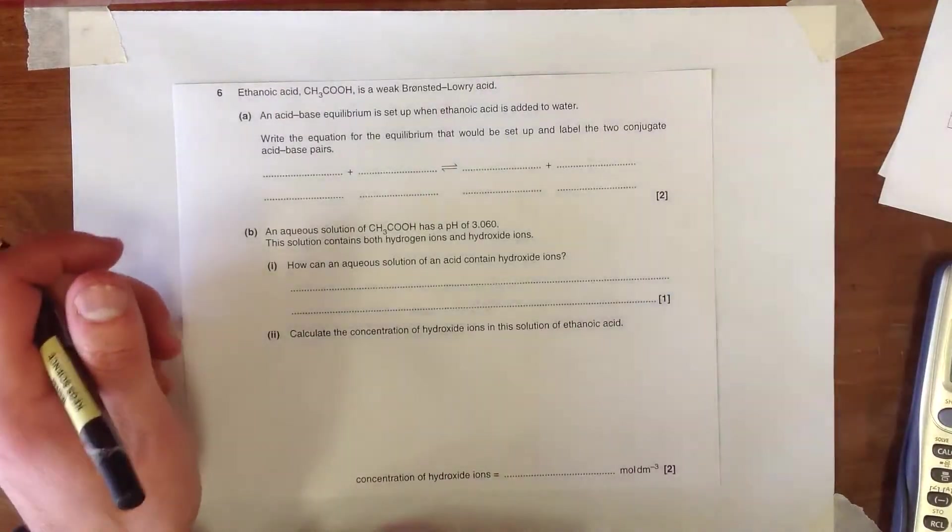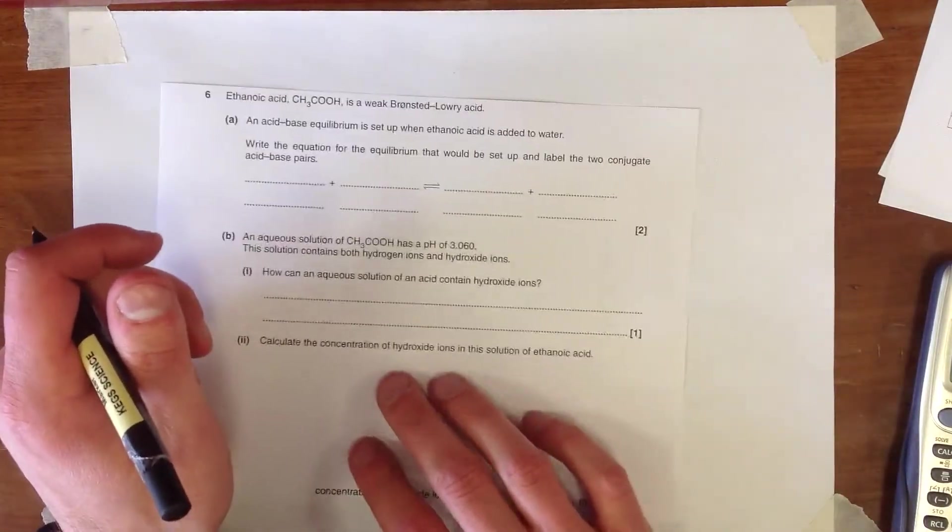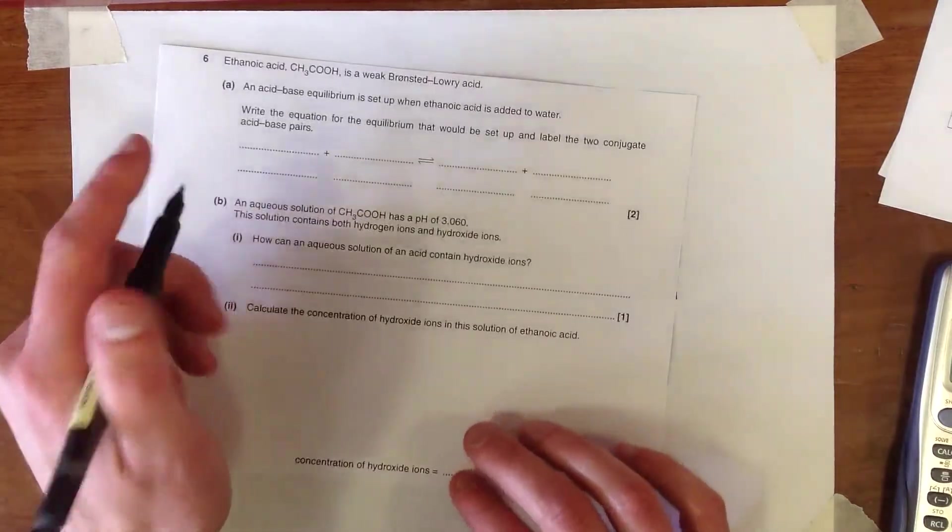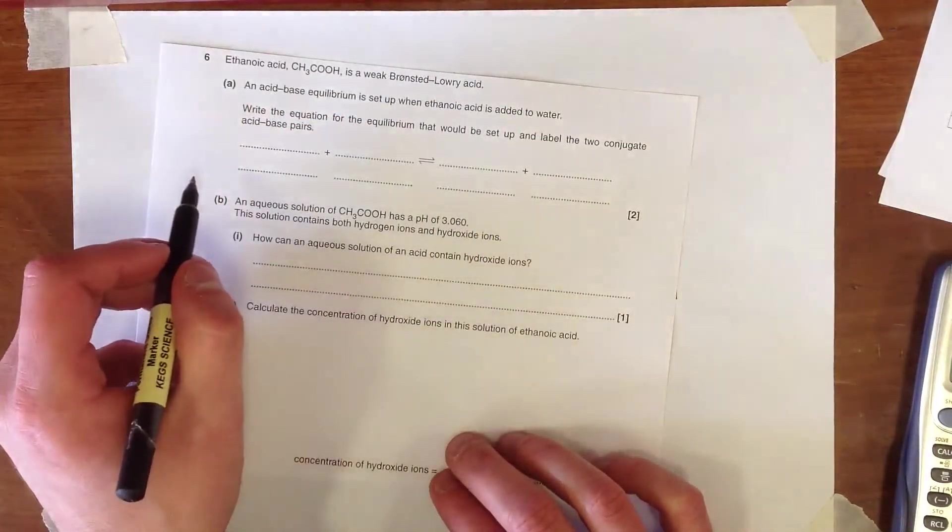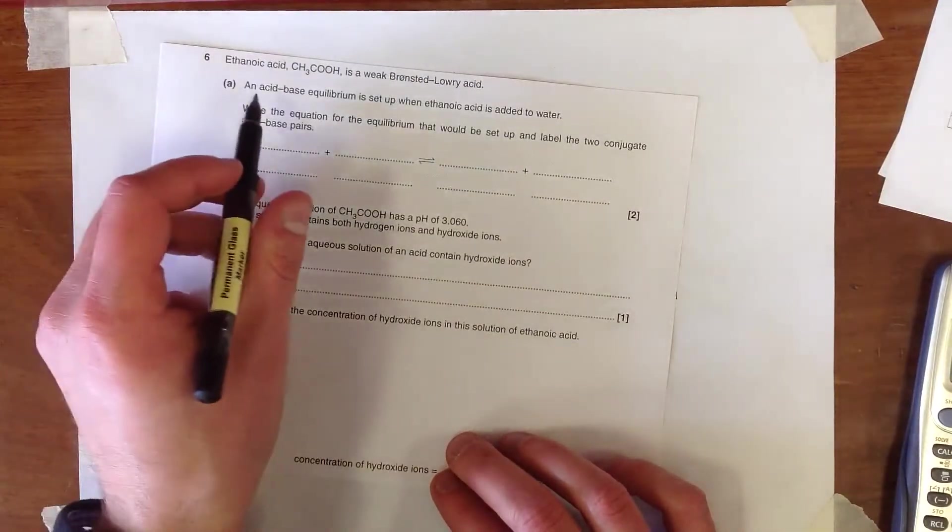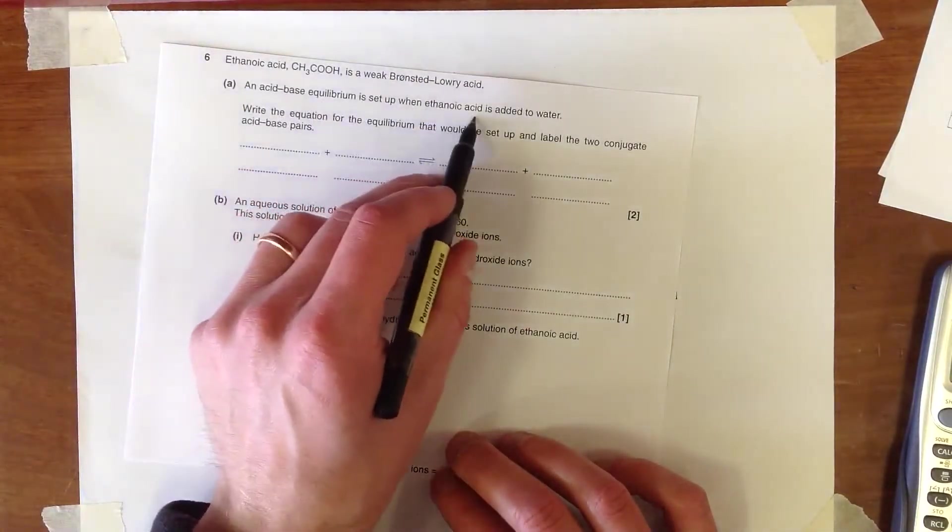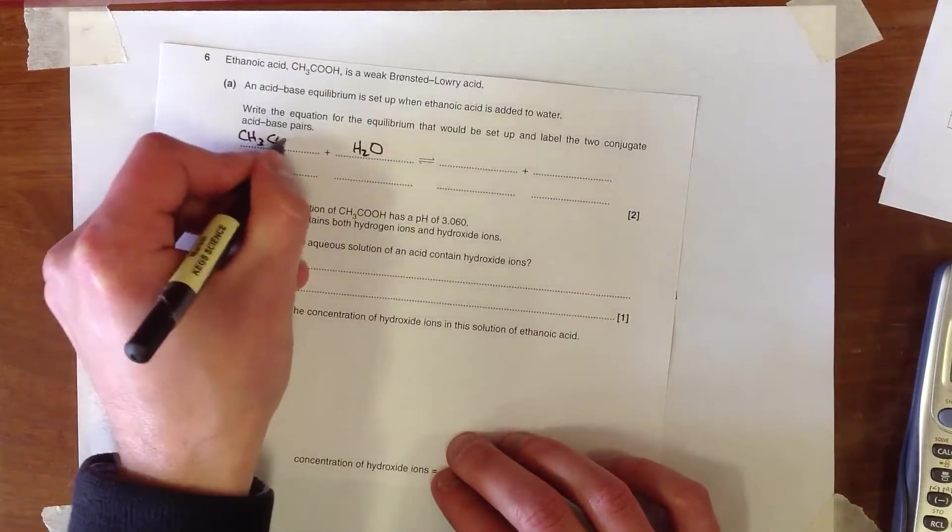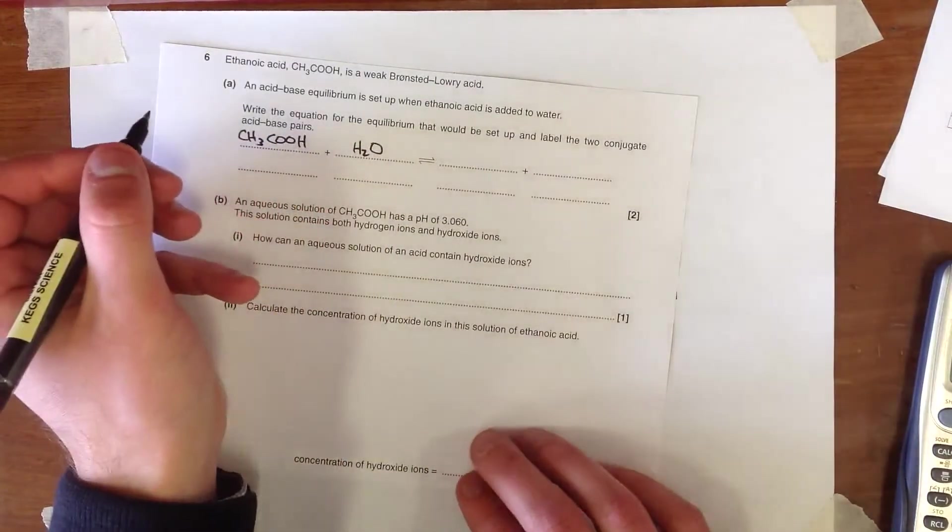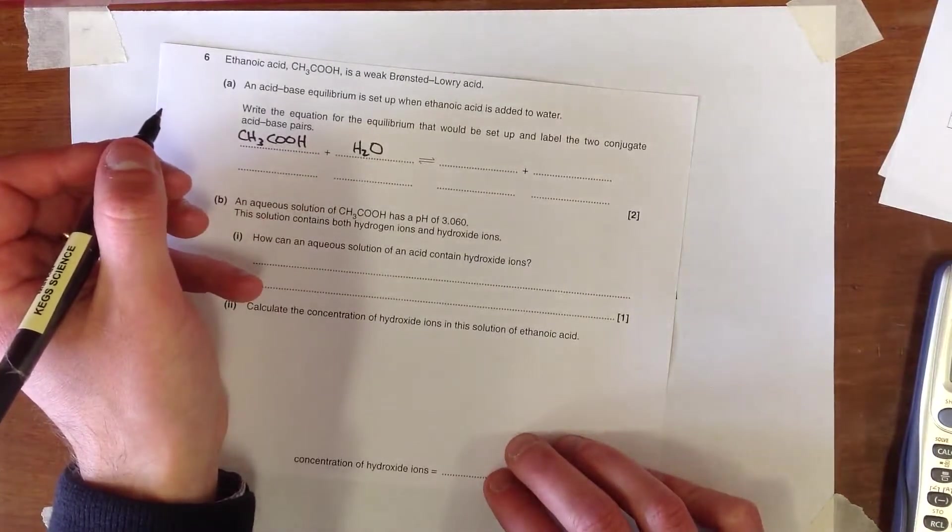Question 6 is a question about acids, bases and buffers. We've been told here that we've got a weak Bronsted-Lowry acid, which is ethanoic acid. It says an equilibrium is set up when ethanoic acid is added to water. So ethanoic acid is going to react with water and there will be an equilibrium set up.